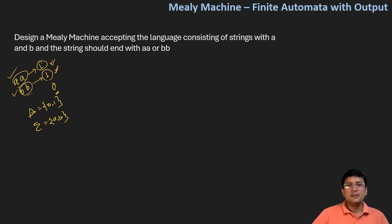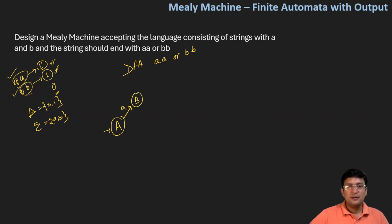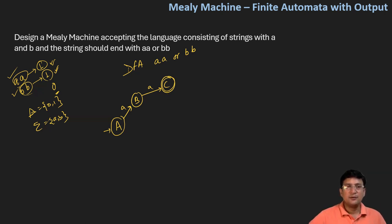We can model this by designing a DFA that ends at AA or BB. Let's say A is the start state. If we get symbol 'a', we move to state B. And if we get 'a' again, we move to state C. Let's say C is the final state. Now if we get a B at state C, it means the string is not ending with AA. Let's say we are designing it for BB only — the smallest string. With B, we move to state D, and with another B, we move to state E, which is the final state. Now if we get B in state C, we should move to state D because we already have one B.